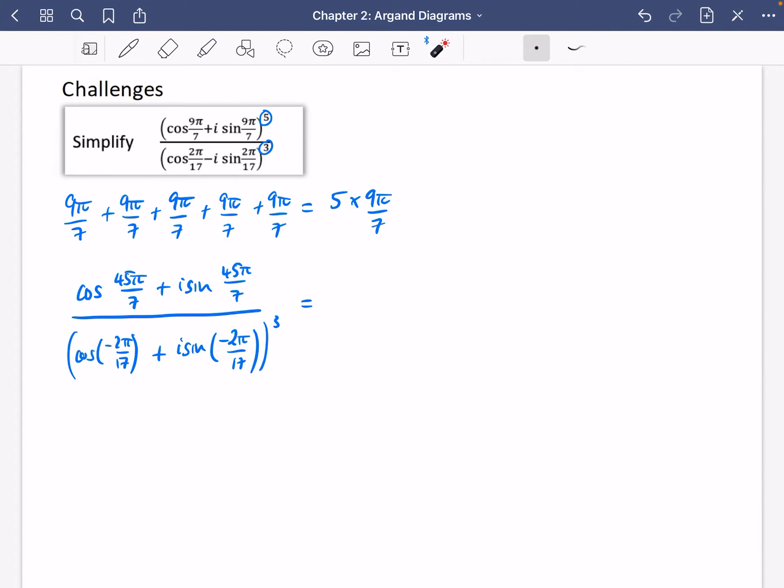Now we can do the same thing because it's to the power of three, we can multiply these angles, these arguments, by three as well. So I'm going to rewrite this, keep the same line there. And then the denominator is going to change and it's going to multiply by three. So it's just going to be minus six pi over 17, and minus six pi over 17.